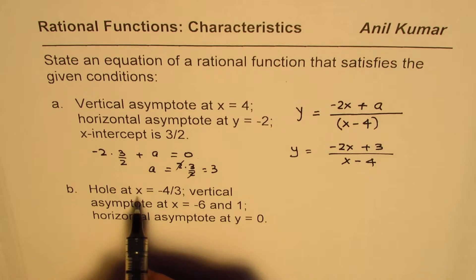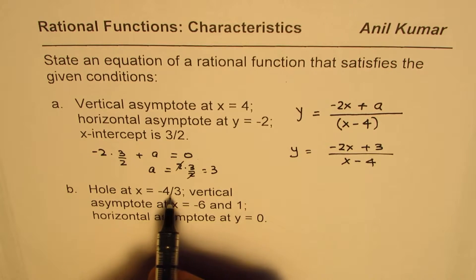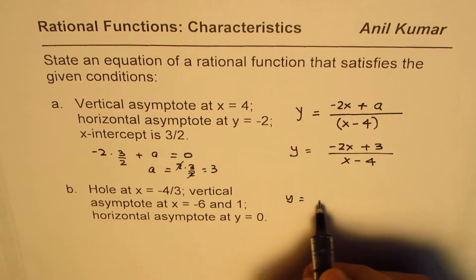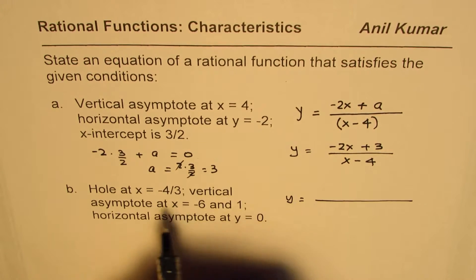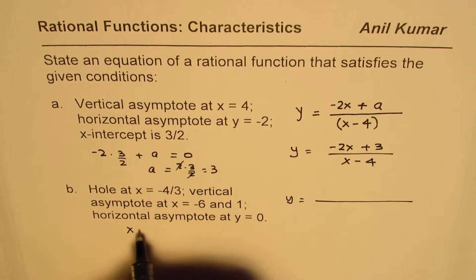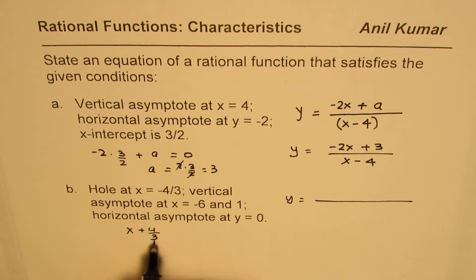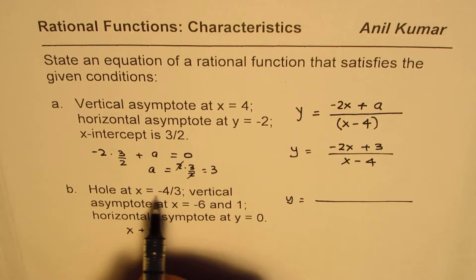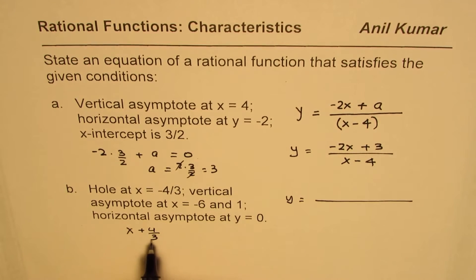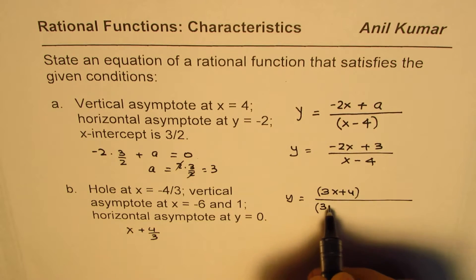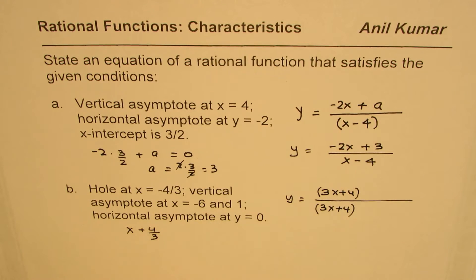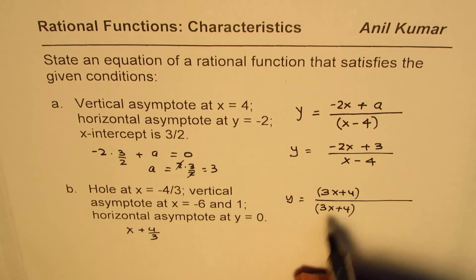Now let's do the next one. It says hole at x equals minus 4 over 3. That means we have a factor which is both in the numerator and denominator. Instead of writing x plus 4 over 3, we write 3x plus 4, which gives a hole. This factor 3x plus 4 will appear in both numerator and denominator as a common factor that cancels out.